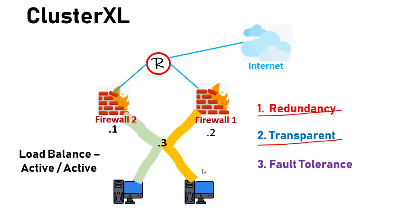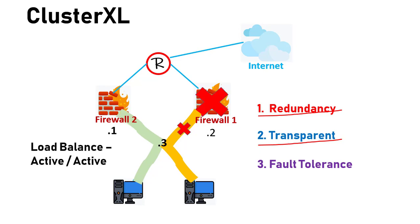In the active-active scenario, there is a third thing we need to have to properly define a cluster: fault-tolerancy. Basically, we can balance the traffic between your firewalls — firewall one, firewall two. You can actually have more than two firewalls in a load balancing scenario. But to define a cluster properly, if one device goes down, the second device needs to be able to pick up 100% of the traffic and not crash because of that. If the second device is crashing, that's not fault-tolerant — that's just not the way we define a cluster. So we have redundancy, transparency, and fault-tolerancy — these are the principles that define a cluster.